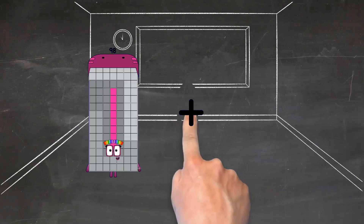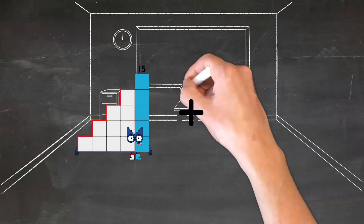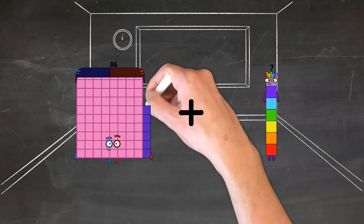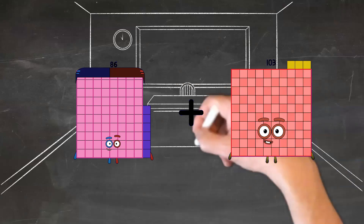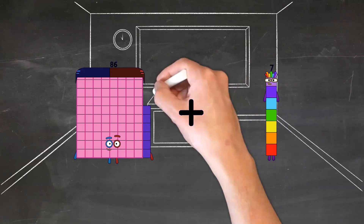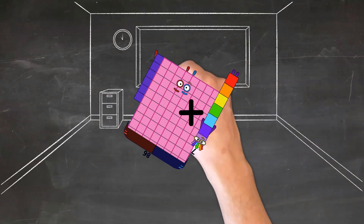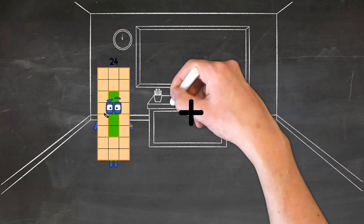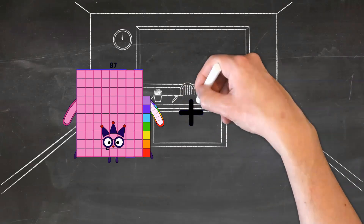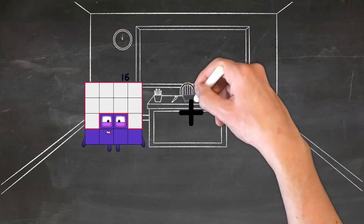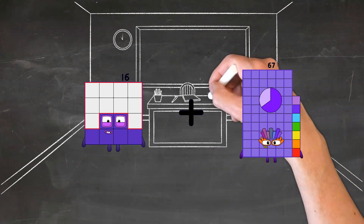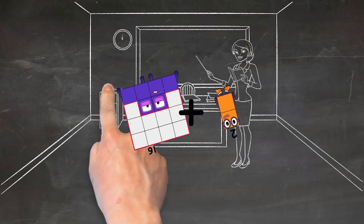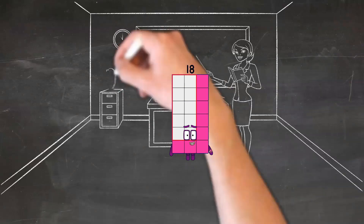86 plus 7 equals 93. 83. 16 plus 2 equals 18.